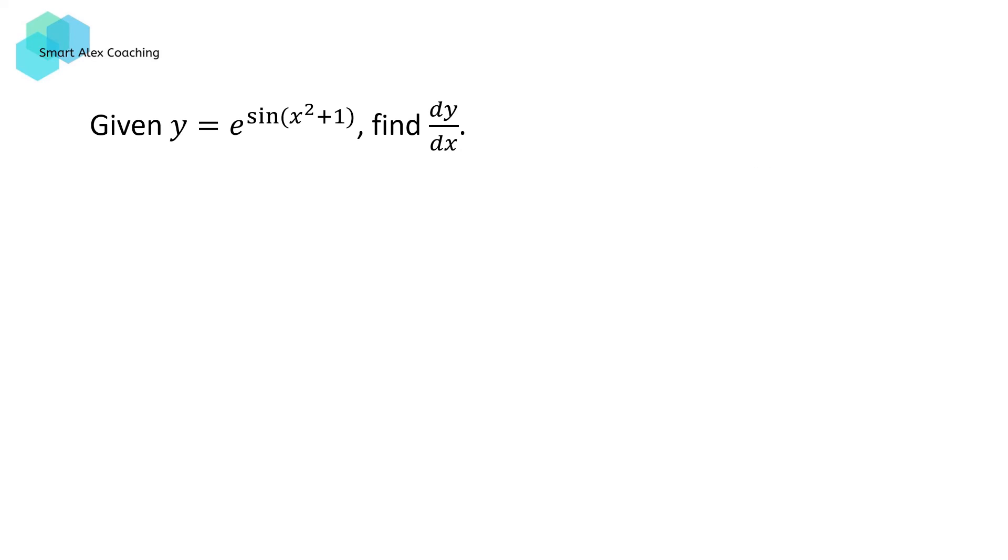In this last example, we want to show you that the chain rule is not limited to two steps. In fact, it can be repeated as many times as required. In this last question, we've got several nested functions. y equals e^(sin(x² + 1)). So first, we're going to introduce the variable v. Let v equal x² + 1. And we're going to say u equals sin(x² + 1), which can be written as sin v. And y is going to be equal to e^u.